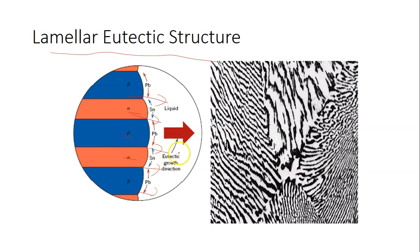The process of redistribution of lead and tin occurs by diffusion in the liquid just ahead of the eutectic liquid interface. The arrows indicate the direction of the diffusion of lead and tin atoms.